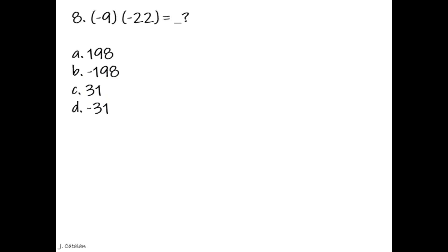Question. Negative 9 multiplied by negative 22 equals underscore. Answer. 198.